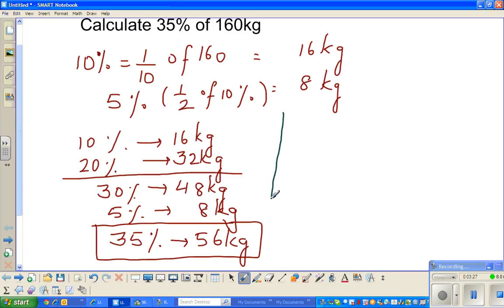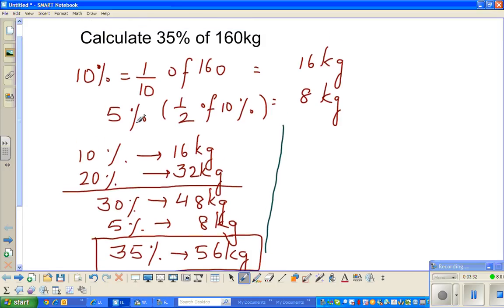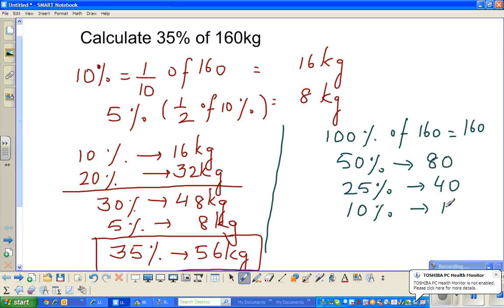Now a different approach. I'm saying I want to find 35%, so I'll start from 100%. 100% of 160 kg is 160. What is 50%? 50% would be half of this, which is 80. What is 25%? 25% is again half of 50%, which is 40. And 10% is one tenth of this, which is 16.